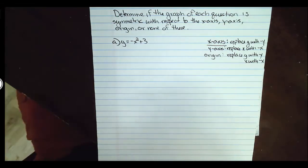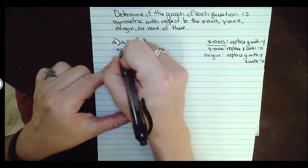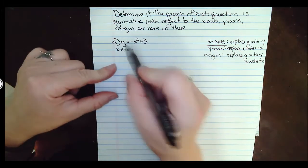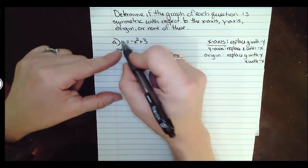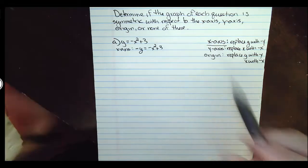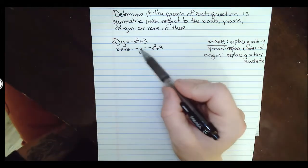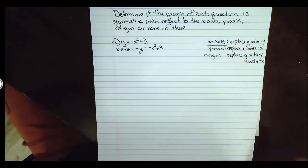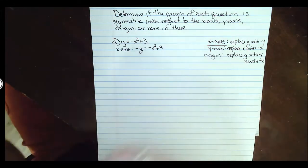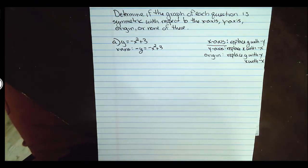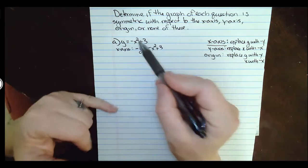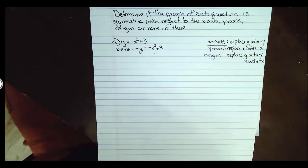Let's go ahead and work through example A. We'll check x-axis symmetry first. For x-axis symmetry, we replace y with negative y. Our equation is y = -x² + 3. If we take this y and replace it with negative y, we're looking to see if we're left with the same equation. There's really nothing we can simplify here, so comparing this to our original, these are obviously not the same equation. So it's not symmetric to the x-axis.